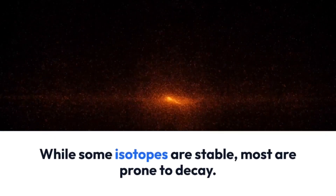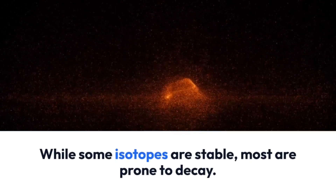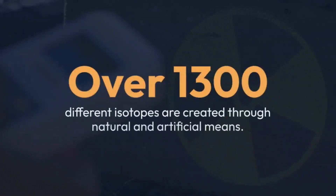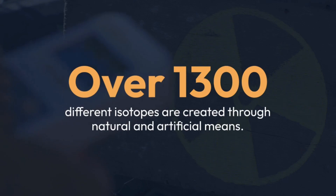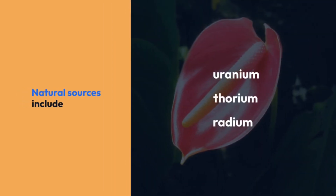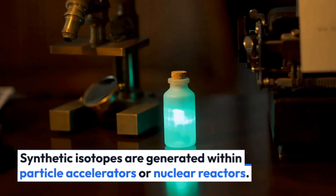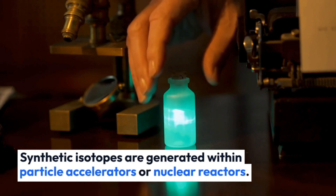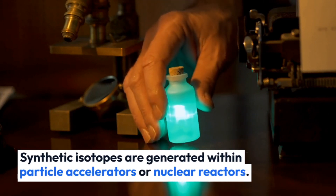While some isotopes are stable, most are prone to decay. Over 1,300 different isotopes are created through natural and artificial means. Natural sources include uranium, thorium, and radium. Synthetic isotopes are generated within particle accelerators or nuclear reactors.